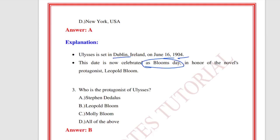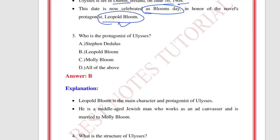Bloom's Day is celebrated in honor of the novel's protagonist, Leopold Bloom. Who is the protagonist of Ulysses? The protagonist is Leopold Bloom. Leopold Bloom is the main character in Ulysses — he is a middle-aged Jewish man.